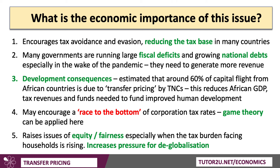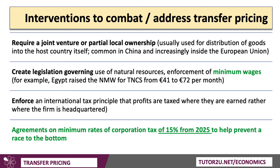For a variety of reasons, this issue really does matter. What policies might be used to combat and address transfer pricing? In some countries — a good example is China — the government may require a joint venture or partial local ownership. That's increasingly used inside the EU as well. If you're going to invest in China, you'll need to partner with a local domestic business, and the idea behind that is to keep more of the profits within the country.